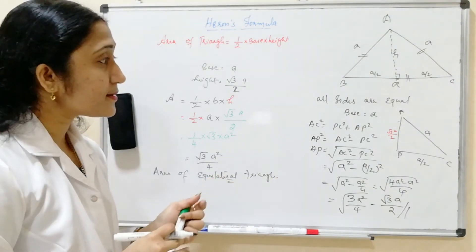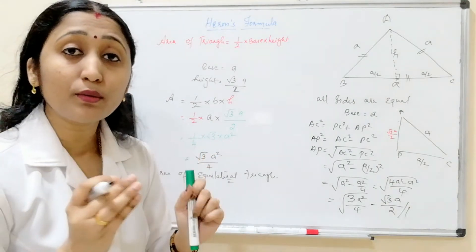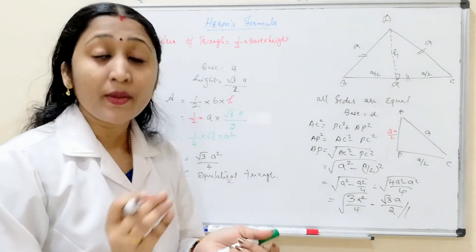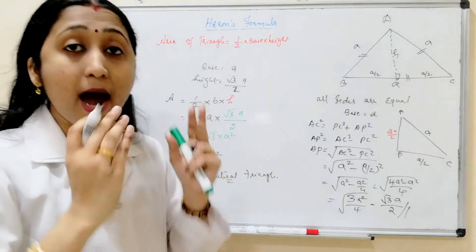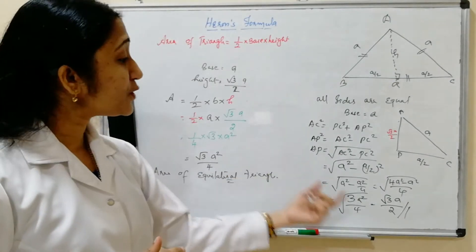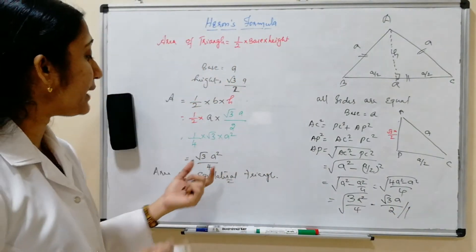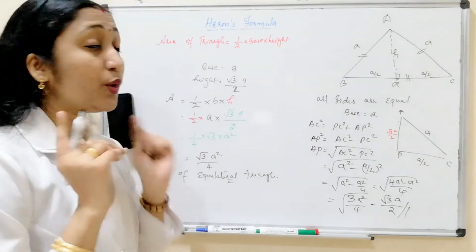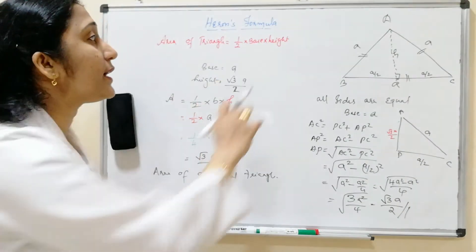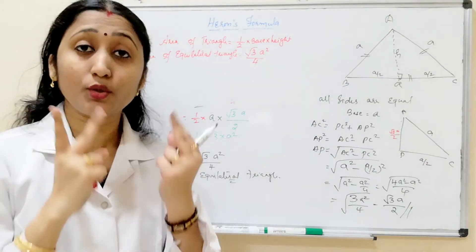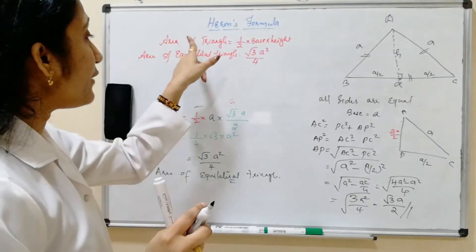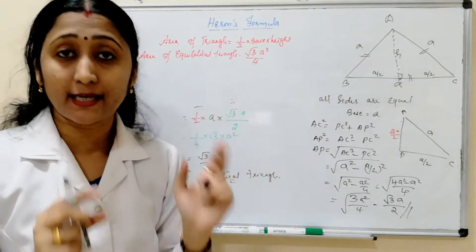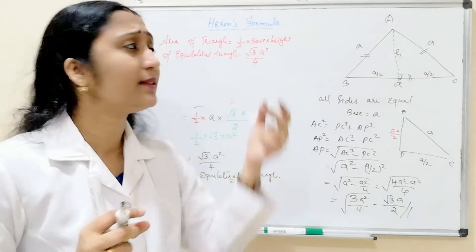I hope you all understood this. If any equilateral triangle is given, draw a perpendicular bisector to the base, find the height using Pythagoras theorem, and apply the area formula. Substituting, the height is root 3A by 2, so the area of an equilateral triangle is root 3 by 4 times A squared. You have to memorize two formulas: area of triangle equals half into base into height, and area of equilateral triangle equals root 3 by 4 times A squared. These are applicable to all examinations.